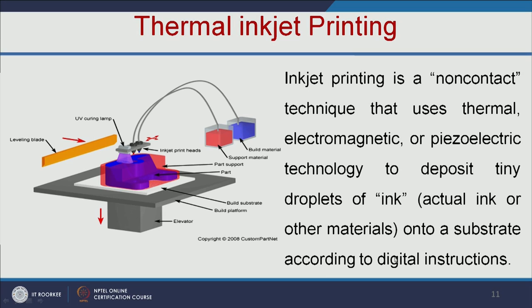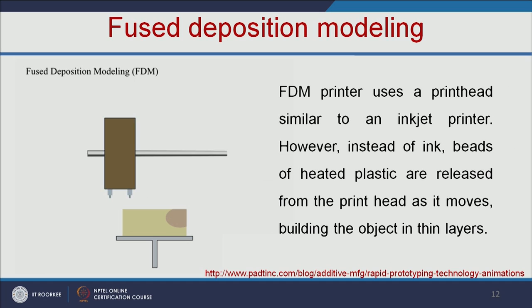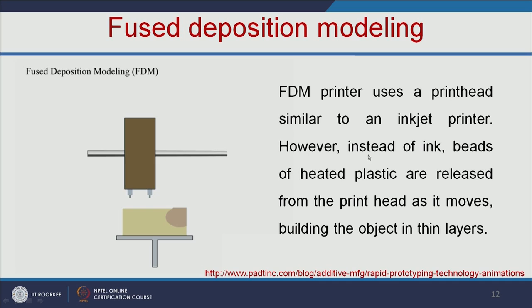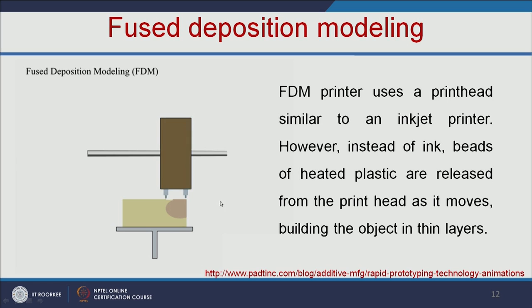Based on the instructions, it will make the particular organ or scaffold for the organ. The third method is FDM — fused deposition modeling. Here the printer uses a print head similar to an inkjet printer, but instead of ink, beads of heated plastic are released from the print head as it moves, building the object in thin layers.